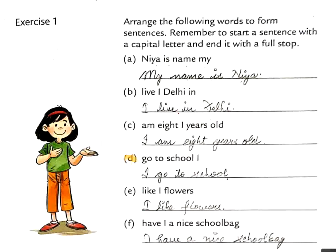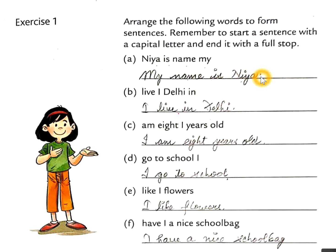Now let's do our exercise 1. Arrange the following words to form sentences. Remember to start a sentence with a capital letter and end with a full stop. Pahle humein isko arrange karna hai properly sentence ke liye, jisse complete meaning mile. Uske baad start karna hai capital letter se. A: Nia is named Ma → My name is Nia. Full stop. B: Live I Delhi in → I live in Delhi. Full stop.